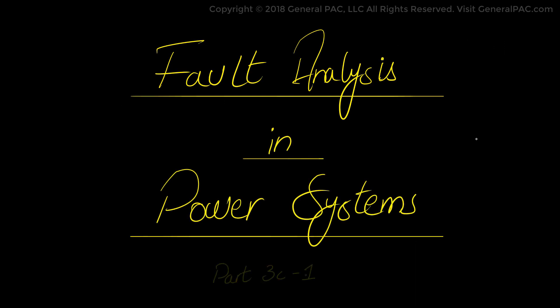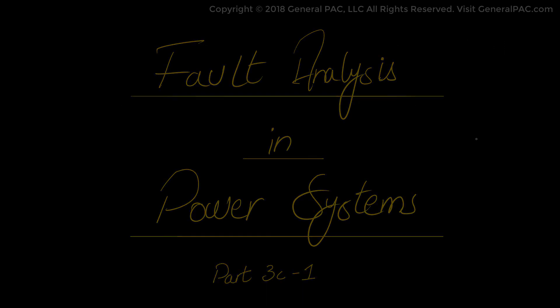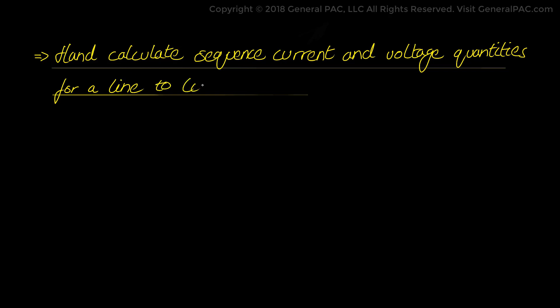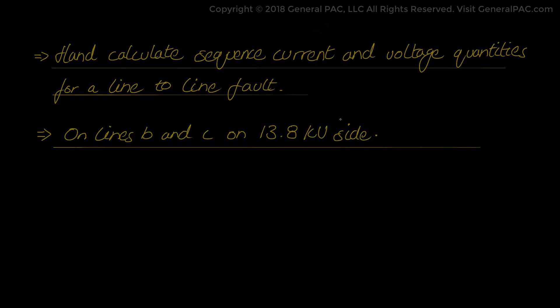Fault Analysis in Power Systems Part 3C-1. In this series on fault analysis in power systems, our objective is to hand calculate the current and voltage quantities for various faults. In this video, we will see how phase current and voltage quantities are calculated for a line-to-line fault on line B and C on the 13.8 kV side of the transformer.